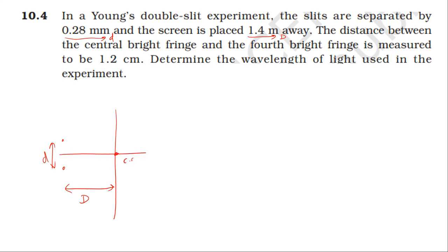In the quarter, the distance from the central bright to the first bright, second bright, third bright, fourth bright. The distance of the fourth bright formed from the central bright is 1.2 centimeter.